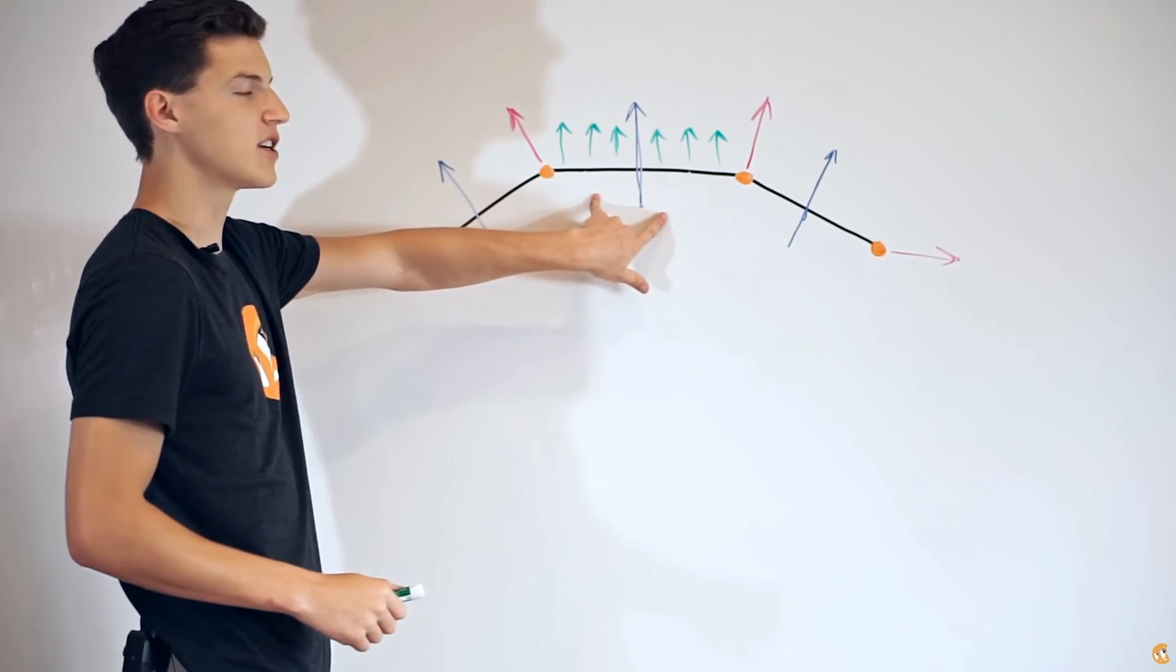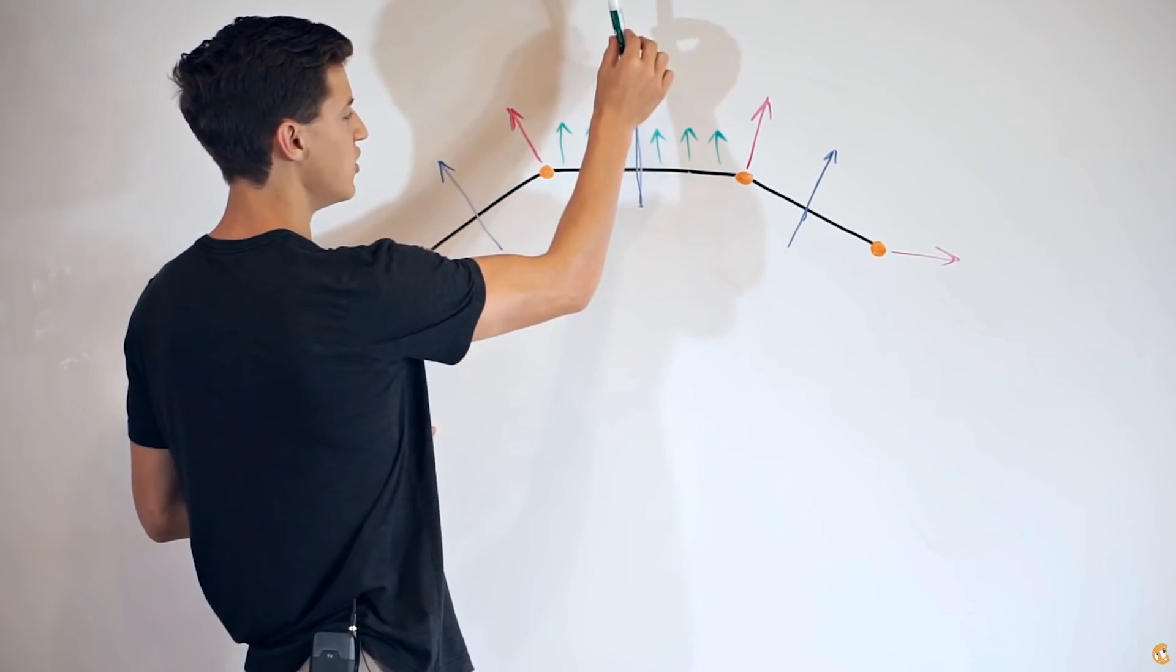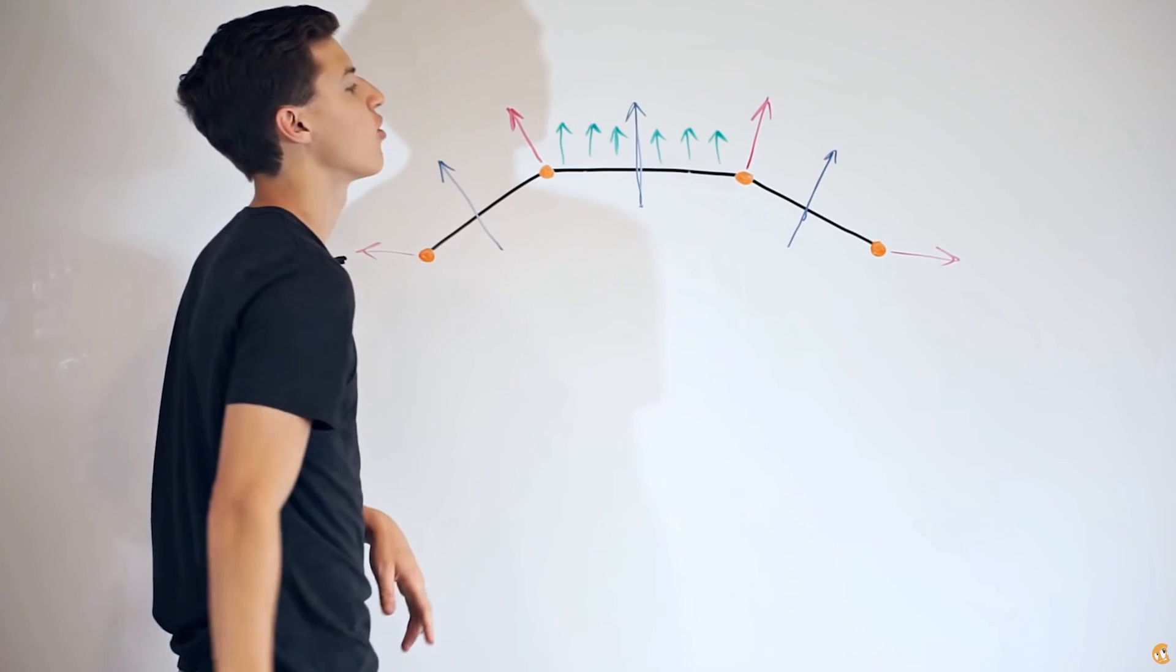Also, I would suggest watching Deconstructing a Normal Map by CGCookie to get a solid understanding of how smooth and flat shading change the direction of the shading normals.